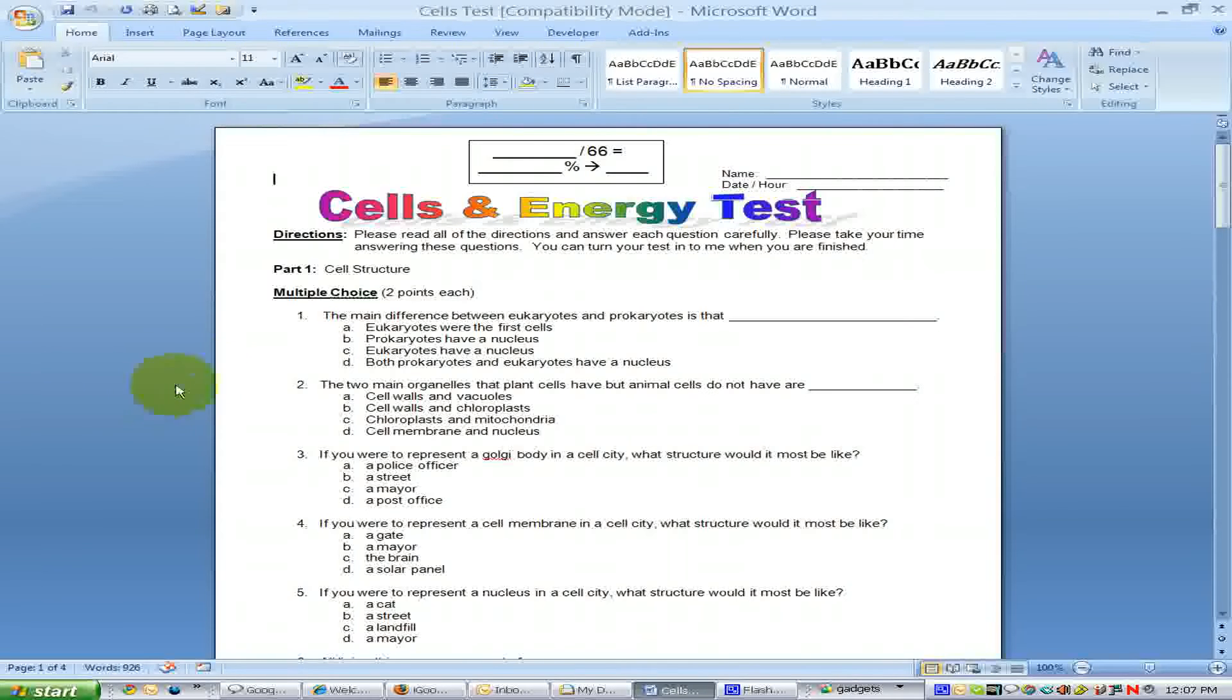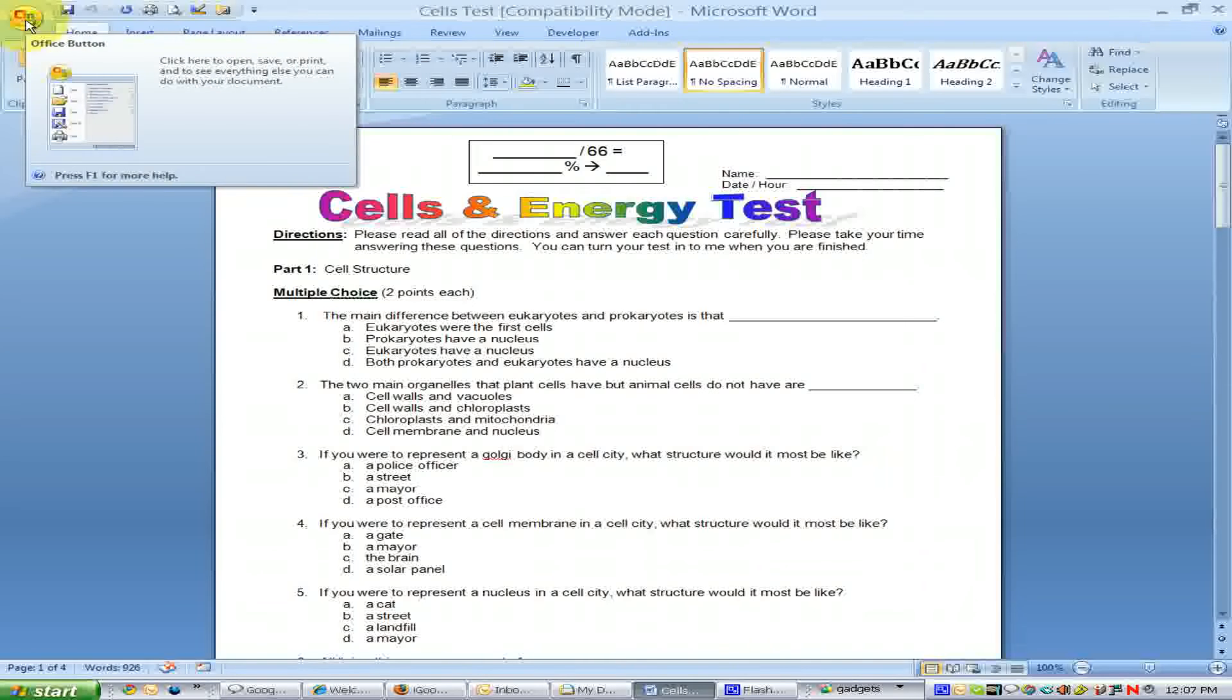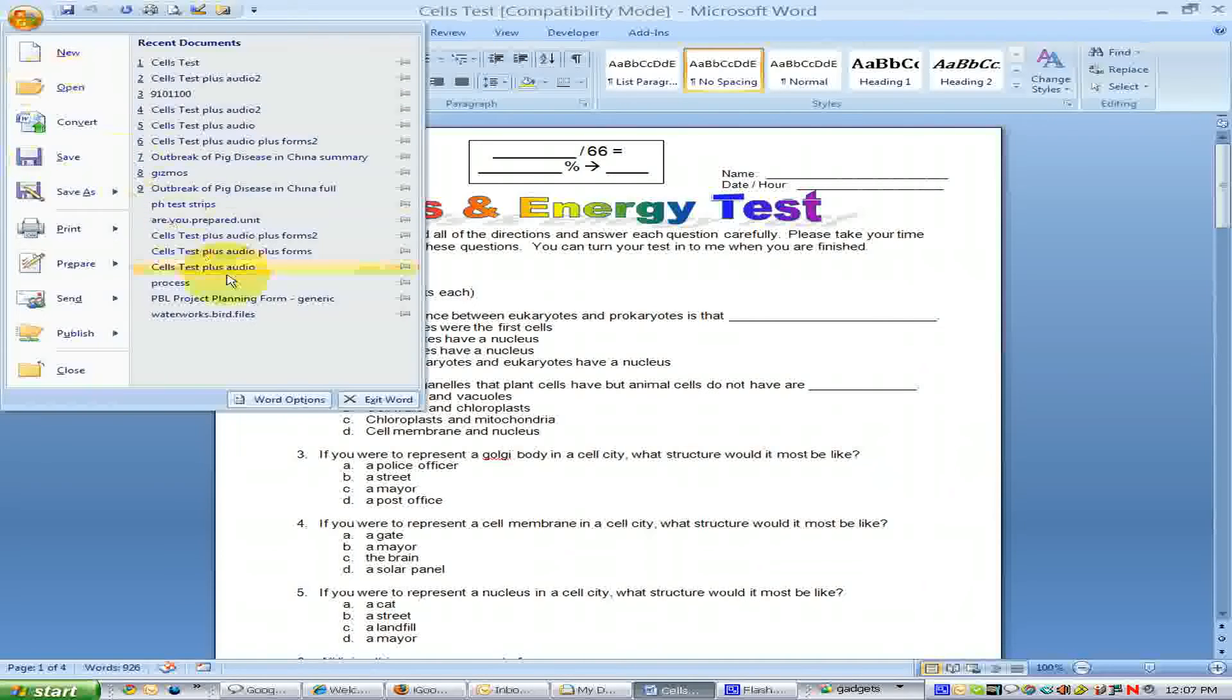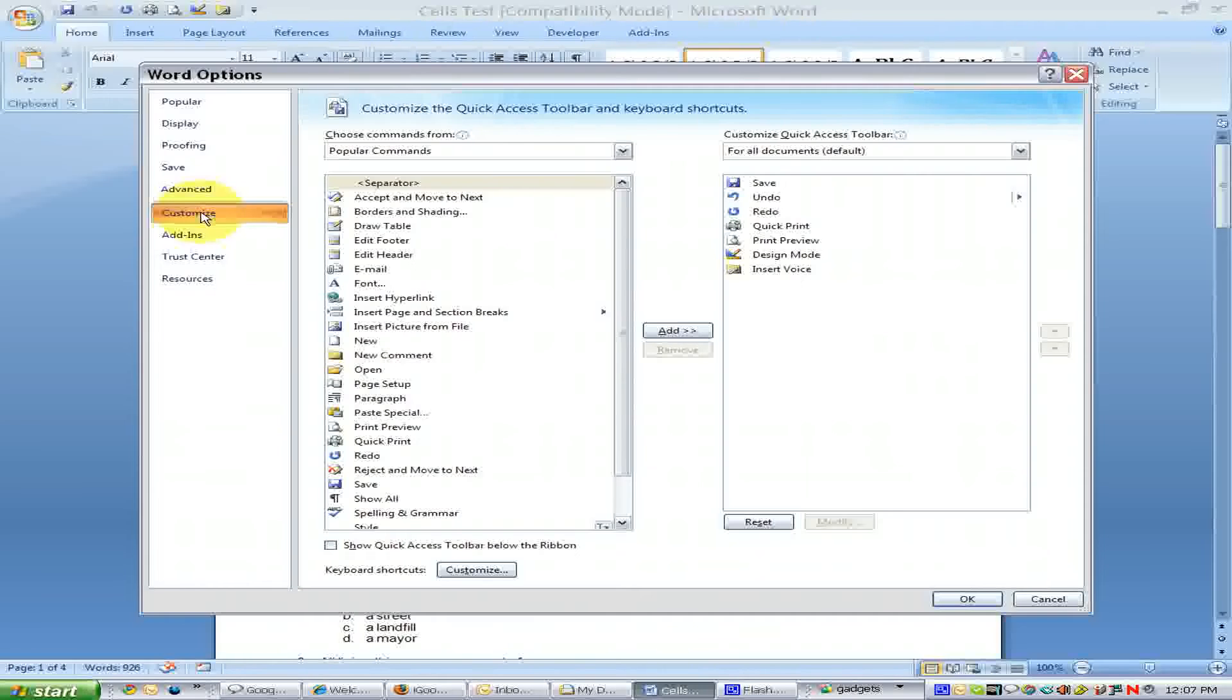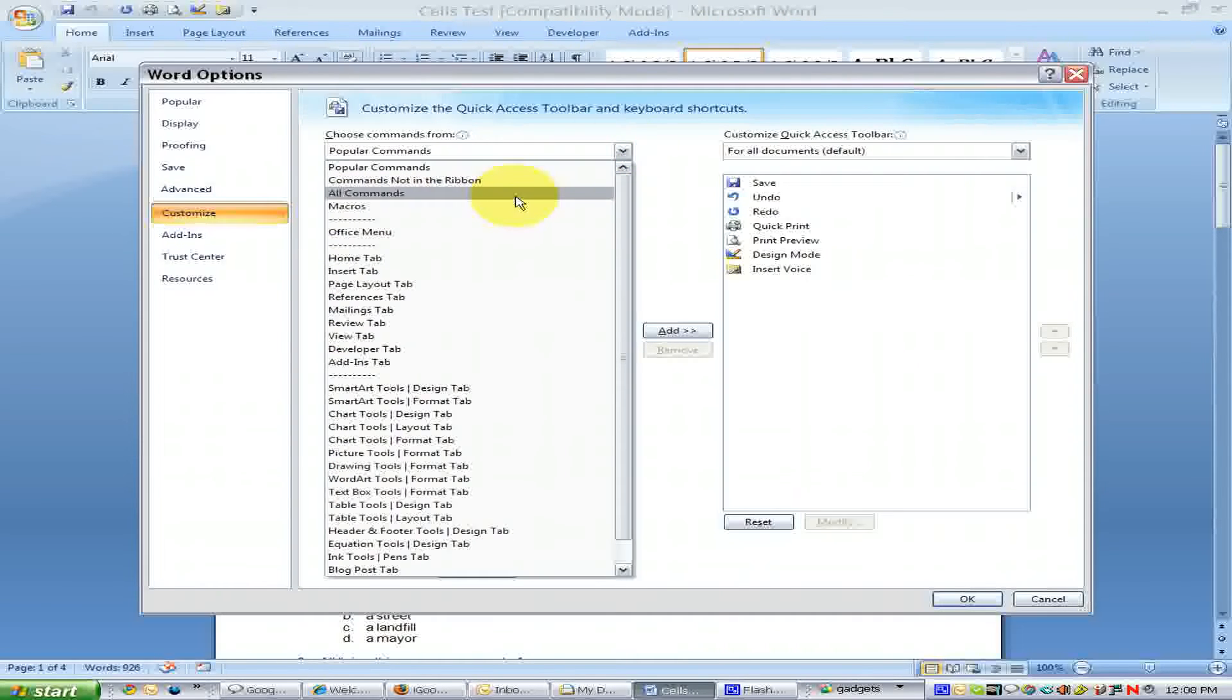The first thing that you'll need to do is click on the Office button, and then go down to the Word options. Then you'll need to go to Customize, and go to All Commands.